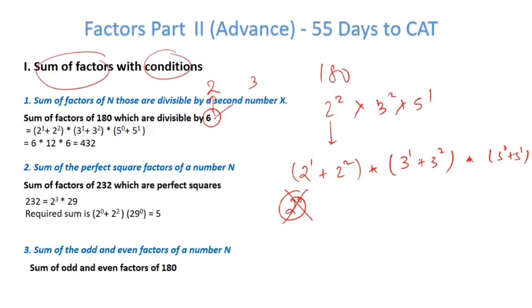6 is a multiple of 2 and 3. So the answer becomes (2¹ + 2²) × (3¹ + 3²) × (5⁰ + 5¹) = (2 + 4) × (3 + 9) × (1 + 5) = 6 × 12 × 6 = 432.